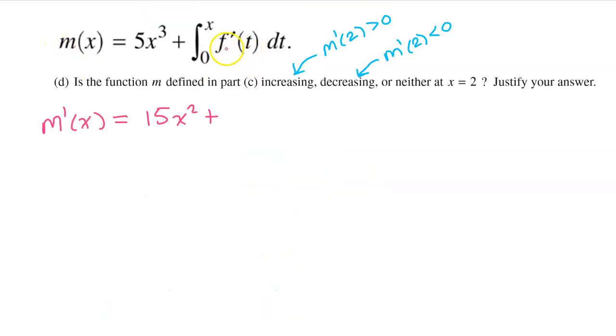In this case, the integrand is f prime, so we're just going to bring that down, but instead of putting t, we will put x. So that's it. This is the derivative of this integral defined function.